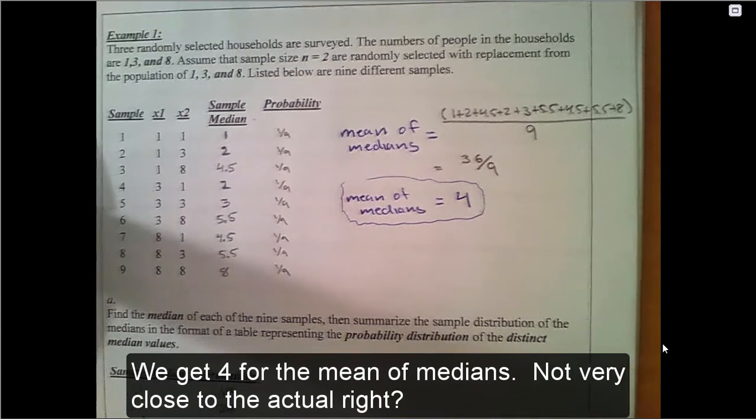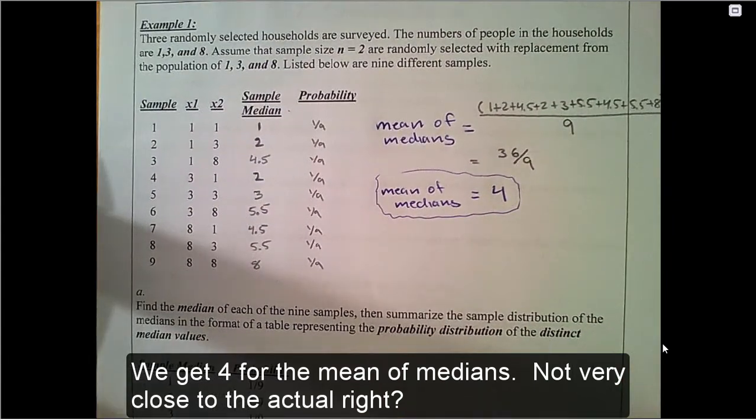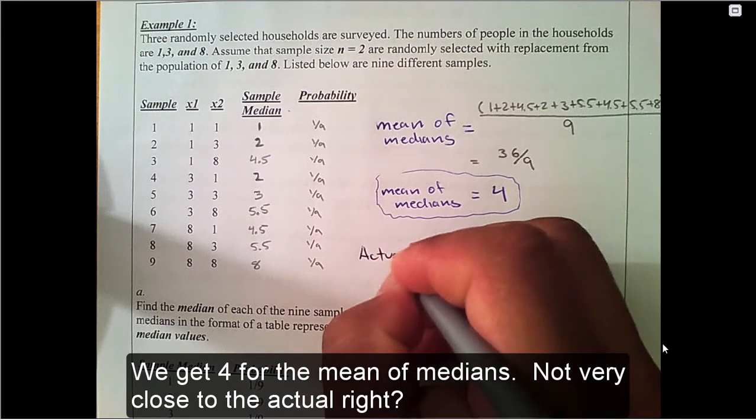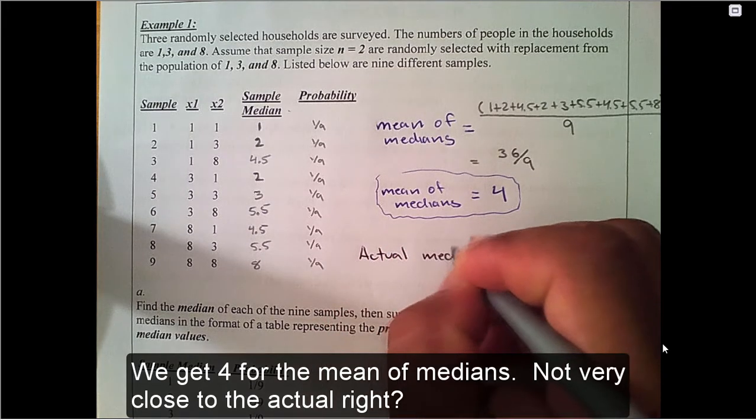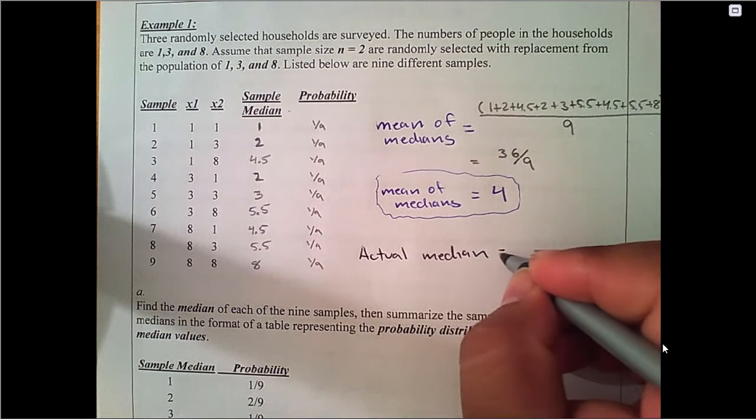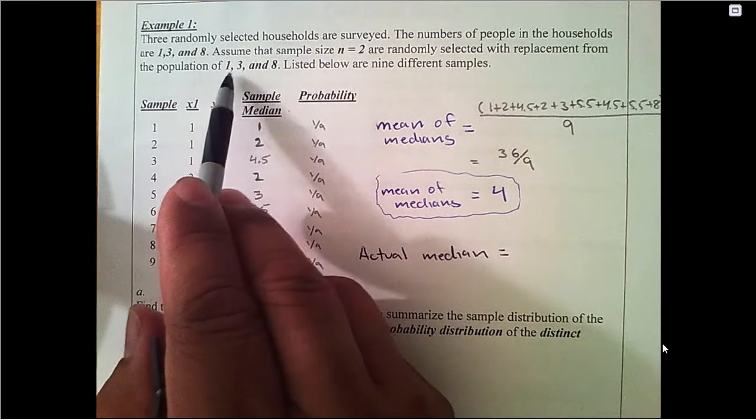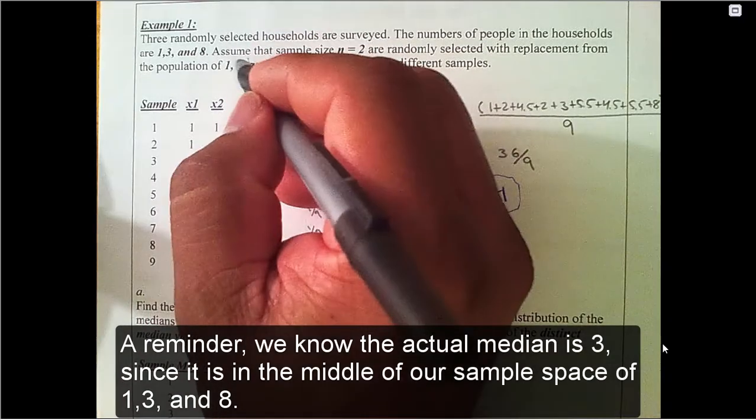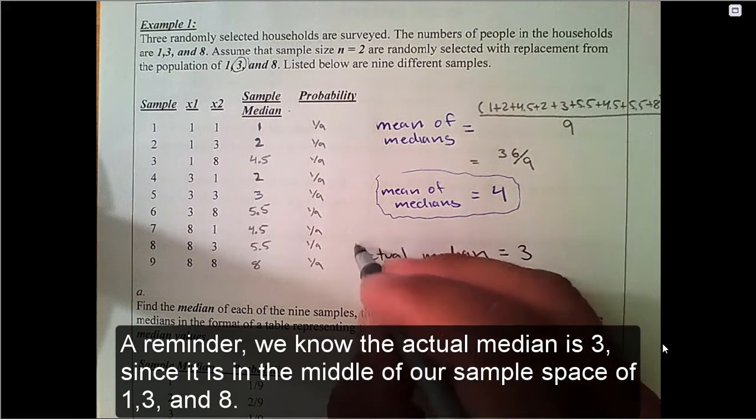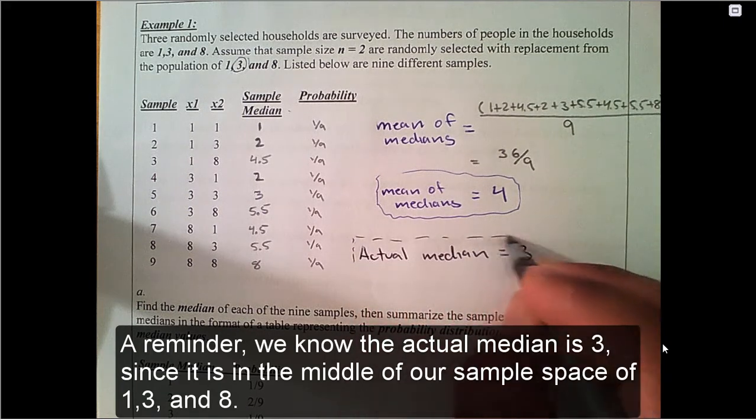We get 4 for the mean of medians, not very close to the actual, right? A reminder, we know the actual median is 3 since it is in the middle of our sample space of 1, 3, and 8.